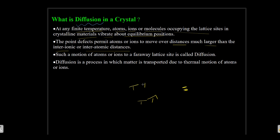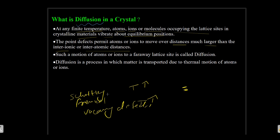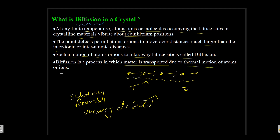When the temperature is increased, there will be creation of point defects such as Schottky defect, Frenkel defect, or vacancy defect. These are different types of defects that may appear in a crystal. Due to the formation of these defects, the ions will start to migrate from their original crystal lattice. Such a motion of atoms or ions to a far away lattice site is called diffusion.